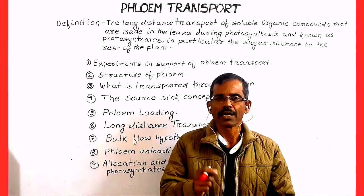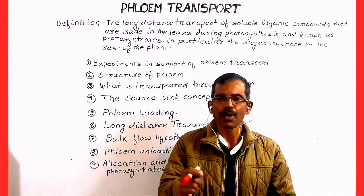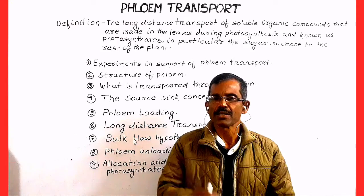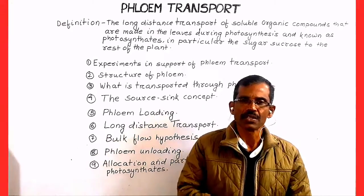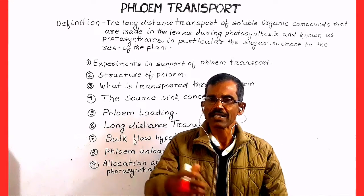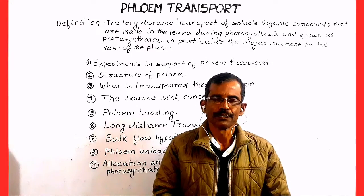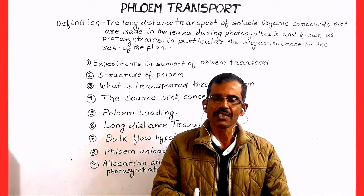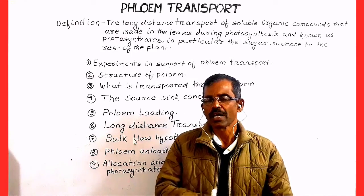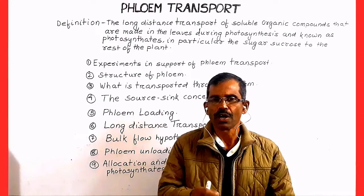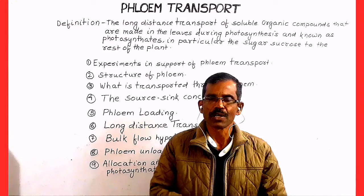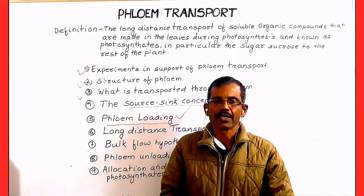Soluble organic compounds, mainly carbohydrates, in particular the sugar sucrose that is produced during the process of photosynthesis, is transported from leaves to the rest of the plant through phloem. This long-distance transport of photosynthates from leaves to the rest of the plant through phloem is known as phloem transport or phloem translocation.